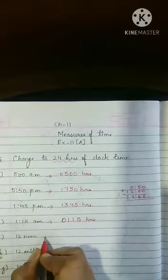Now 12 midnight. How do we write 12 midnight? When we complete 24 hours of clock we are talking about. We can write 00:00 hours also. Because 24 hours we are completing.